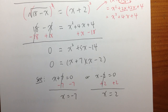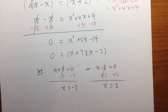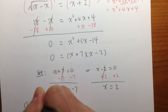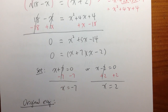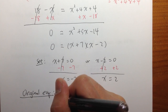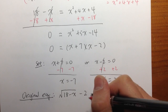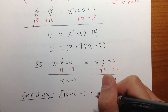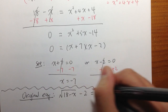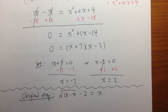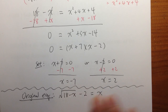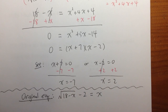So are we done? Are they both the answers? Be really careful. Whenever you are dealing with square roots or rational equations, always, always check your answer. Always look back at the original equation. So we are going to see if plugging in negative 7 and plugging in 2 into x will work or not.